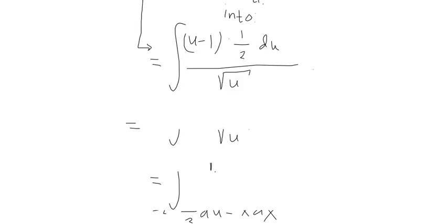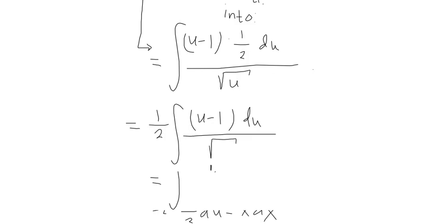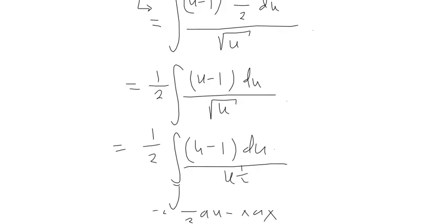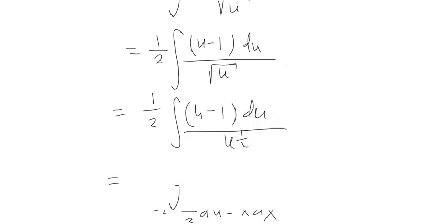We can rewrite the square root of U as U to the 1 half, and dividing is the same as multiplying by U to the negative 1 half. This becomes 1 half times the integral of U to the negative 1 half times (U minus 1) with respect to U.